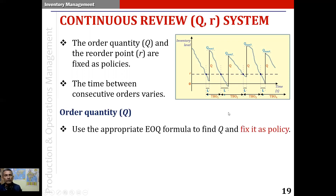To find the order quantity Q, we simply take the average value of demand, the unit order cost, the holding cost, and the backorder cost if involved, and use the appropriate EOQ formula to find Q-star. Even though all the EOQ assumptions are not satisfied, we take this Q-star as the quantity to be ordered.